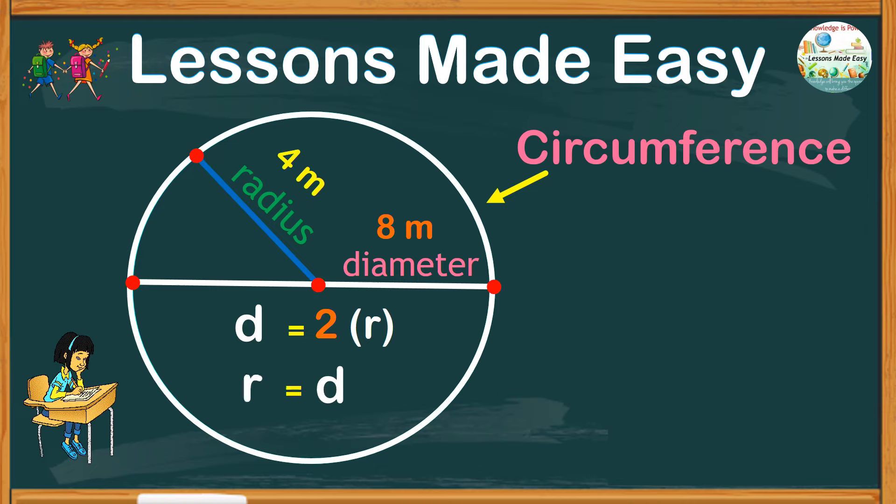Or, radius equals diameter divided by 2. But how do we calculate for the circumference?